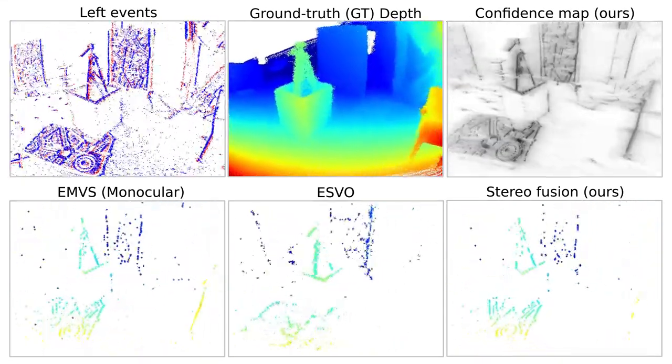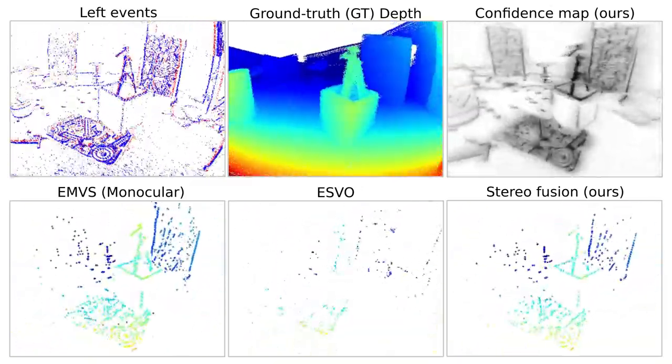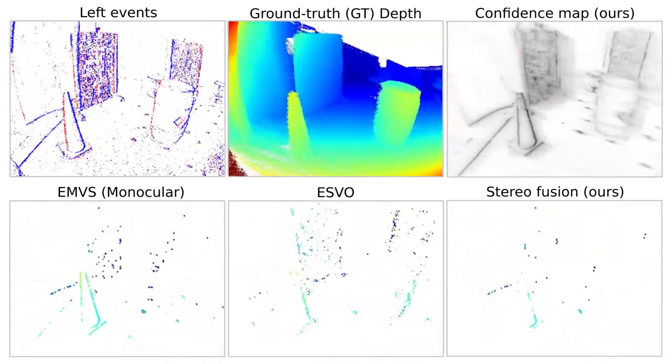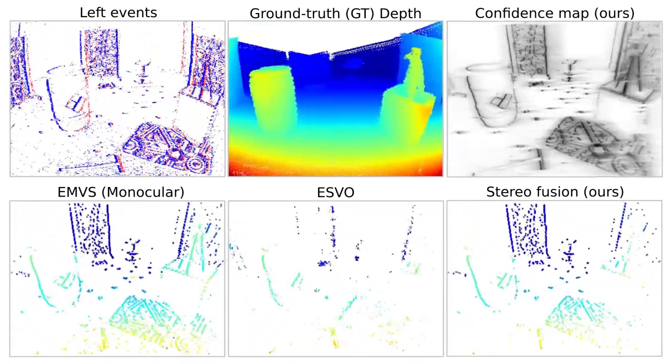The depth estimation is better when there is lateral motion parallax in the scene compared to when the drone moves forward or backward. Our event-based method can also estimate depth well in regions where even ground truth depth from LiDAR is unavailable.